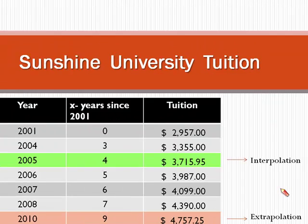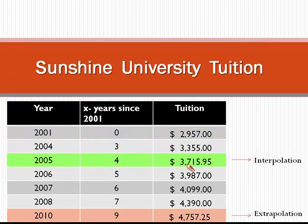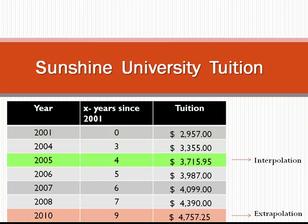There's one last thing I'd like to point out. The data we developed for 2005 is an example of interpolation, because this data falls within our given data range. We were given data between 2001 and 2008, and 2005 falls in between those years. The 2010 data is outside of our given range, so it's an example of extrapolation — we were given data from 2001 to 2008, and 2010 is outside of that range.